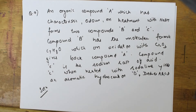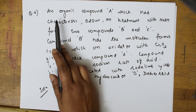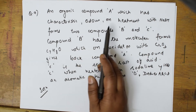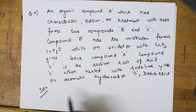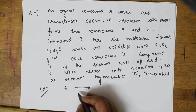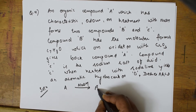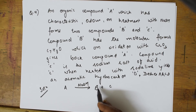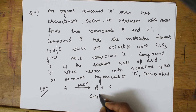Let us start the ninth question. Whenever a paragraph-based question is given, write the summary of facts. An organic compound A has a characteristic odor; on treatment with sodium hydroxide it forms two compounds B and C. Compound B has molecular formula C7H8O.